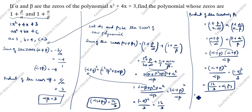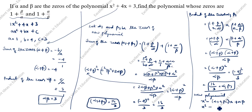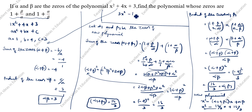Now we write the new polynomial: x squared minus (alpha 1 plus beta 1)x plus alpha 1 beta 1, which gives x squared minus 16 by 3 times x plus 16 by 3. Multiplying through by 3, the new polynomial is 3x squared minus 16x plus 16, or equivalently one-third of bracket 3x squared minus 16x plus 16.